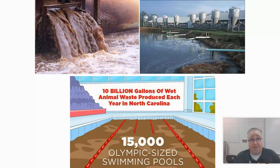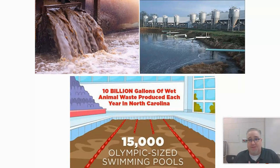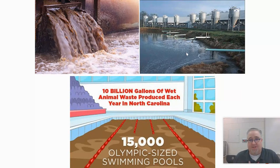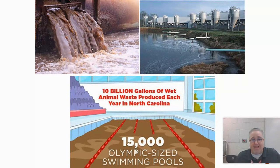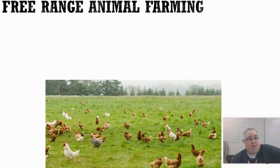Here's a picture of a CAFO — those metal shacks in the background are where the animals live. You can see the pipes that pump all the waste into this big pond, called a manure lagoon. Imagine the smell. Just in North Carolina, 10 billion gallons of animal waste are produced every year — equivalent to 15,000 Olympic-sized swimming pools. Waste is clearly a very big problem.